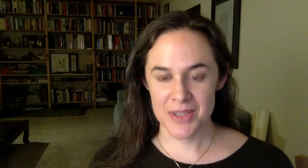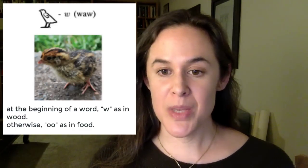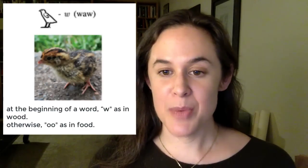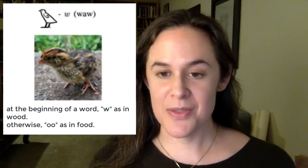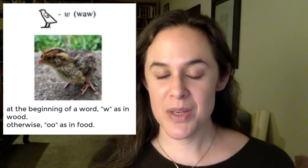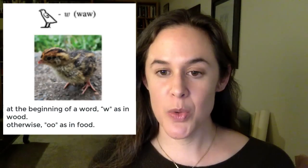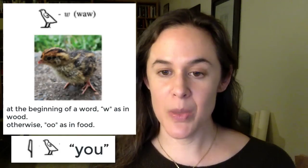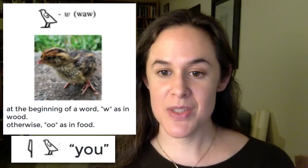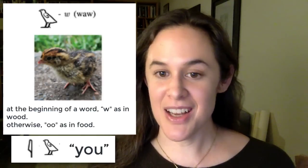Next we come to the third of our semi-vowels — sounds that are actually consonants but that we pronounce today as vowels. In this case, it's the quail chick hieroglyph, one of the cuter hieroglyphs in my opinion, which we call Waw. It's probably more like a W, but we pronounce it like the 'oo' in 'food.' A Yod followed by a Waw — a reed leaf and then a quail chick — is pronounced 'u.' You'll see this combination a lot in Middle Egyptian.